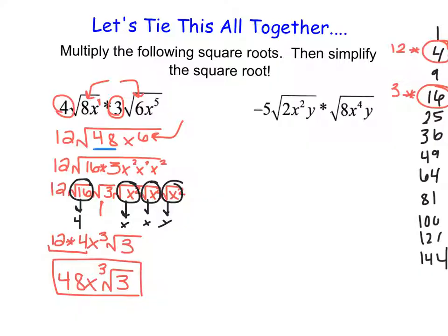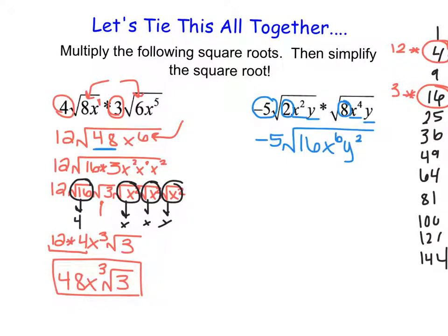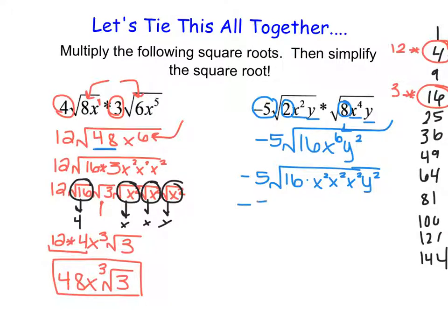In the next example, I notice just one number outside the root, so that stays. Inside the root: 2 times 8 is 16. Then x squared times x to the fourth gives x to the sixth. And y times y gives y squared. Now I notice that 16 is a perfect square, so it will evaluate very nicely — I don't need to break it up. I focus on the variables and rewrite x to the sixth as x squared times x squared times x squared, leaving y squared as is. I then give each its own square root: the square root of 16, three square roots of x squared, and the square root of y squared.